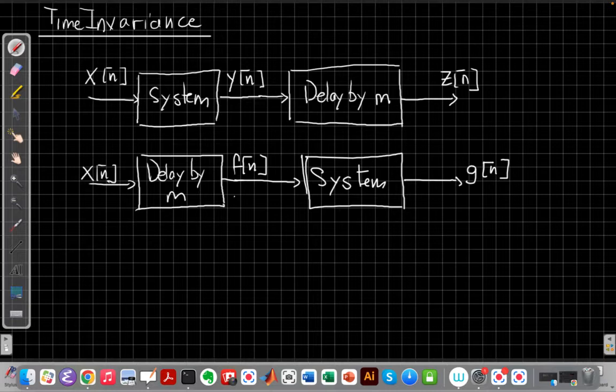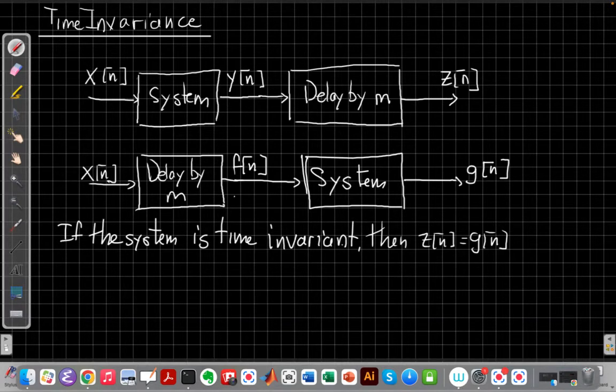So for the second figure, I'm going to take that same input x[n], delay it first by m samples to get some new input f[n], and then put that through the system. And the key idea is if the system is time invariant, then z[n] will equal g[n] for every choice of x[n] and m.